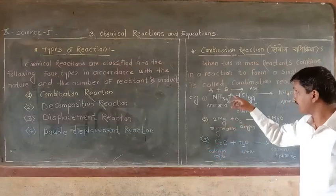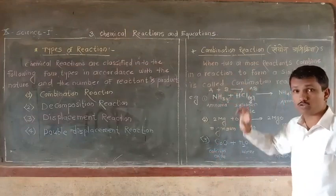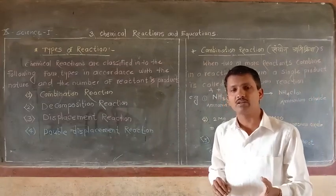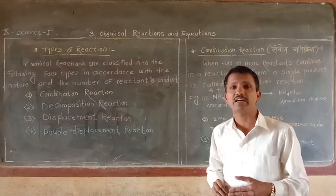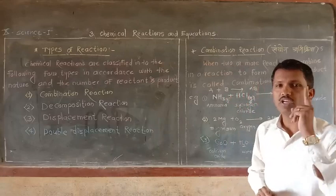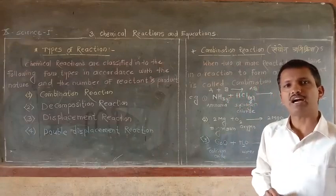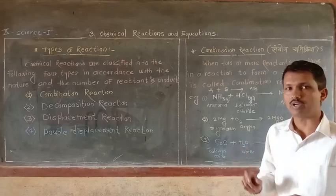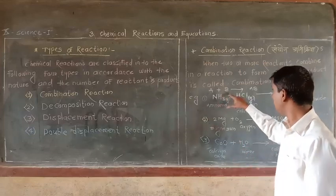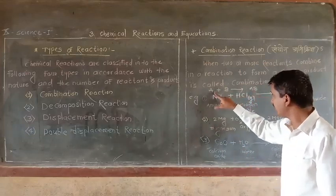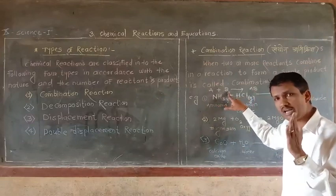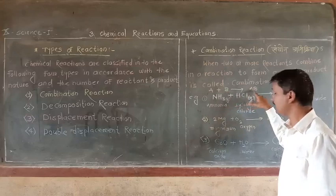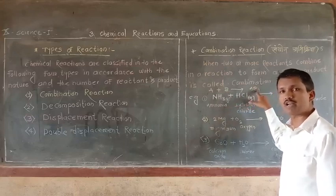See an example. Here, A and B are the two reactants taking part in the reaction and form only AB as a single product. So it is a combination reaction.